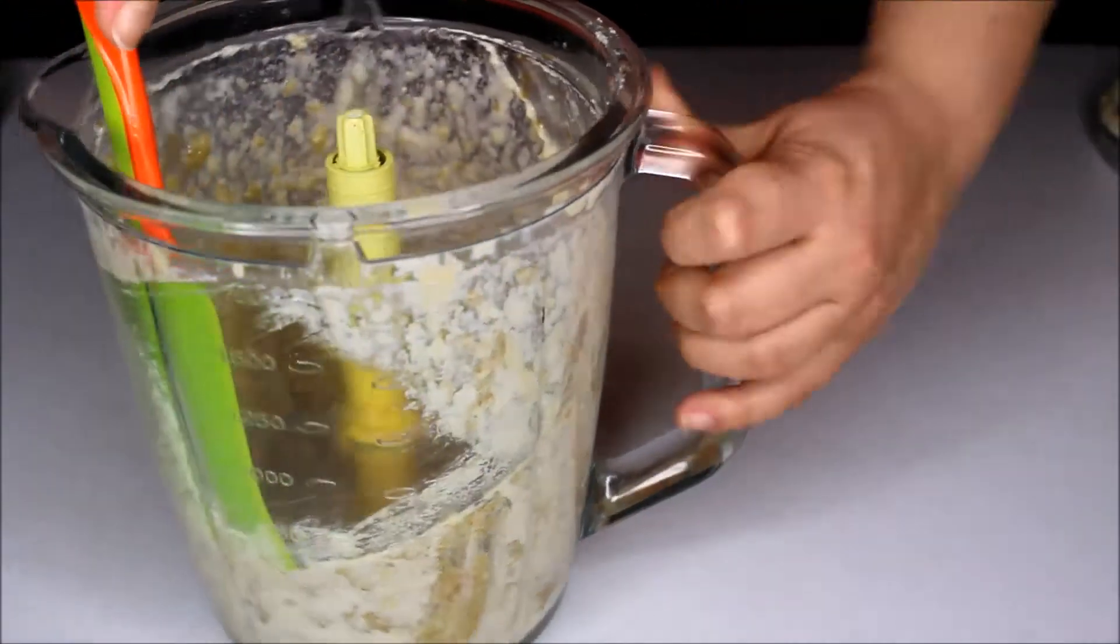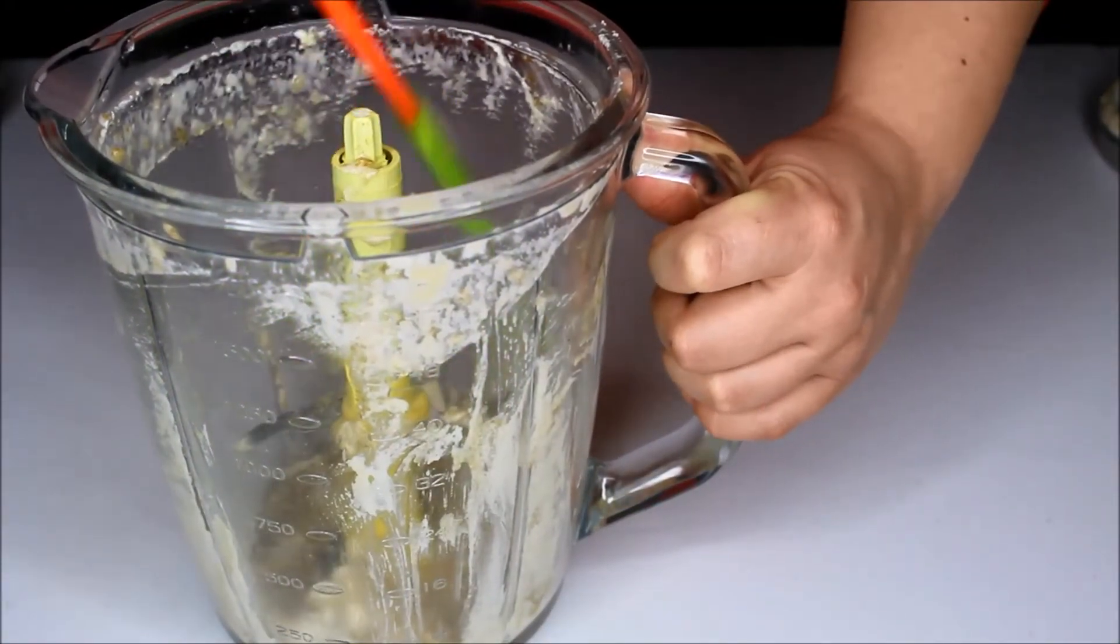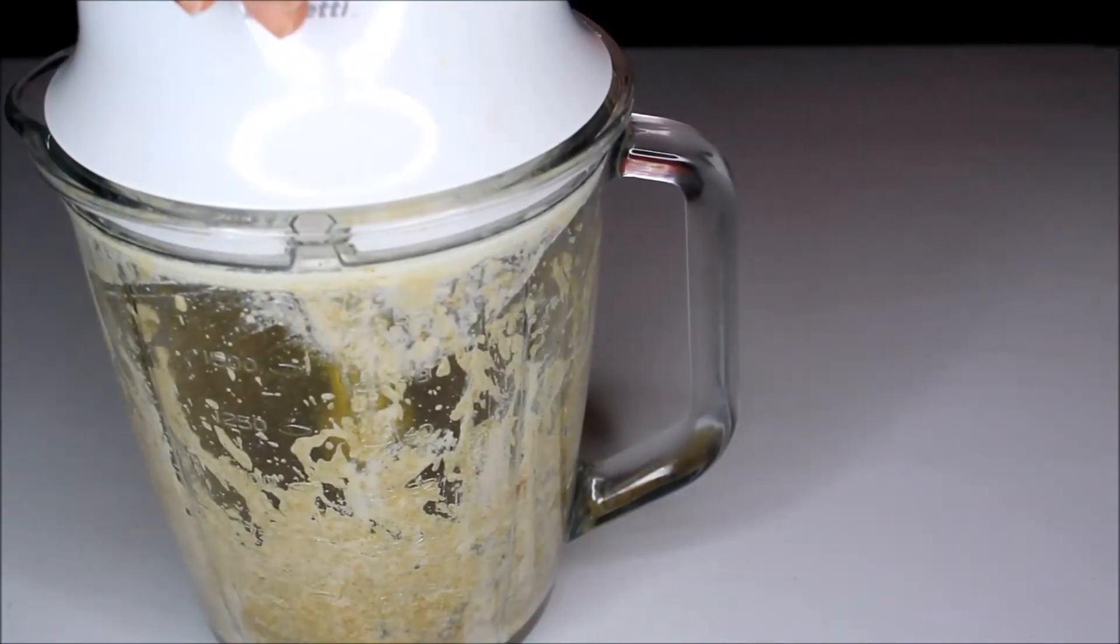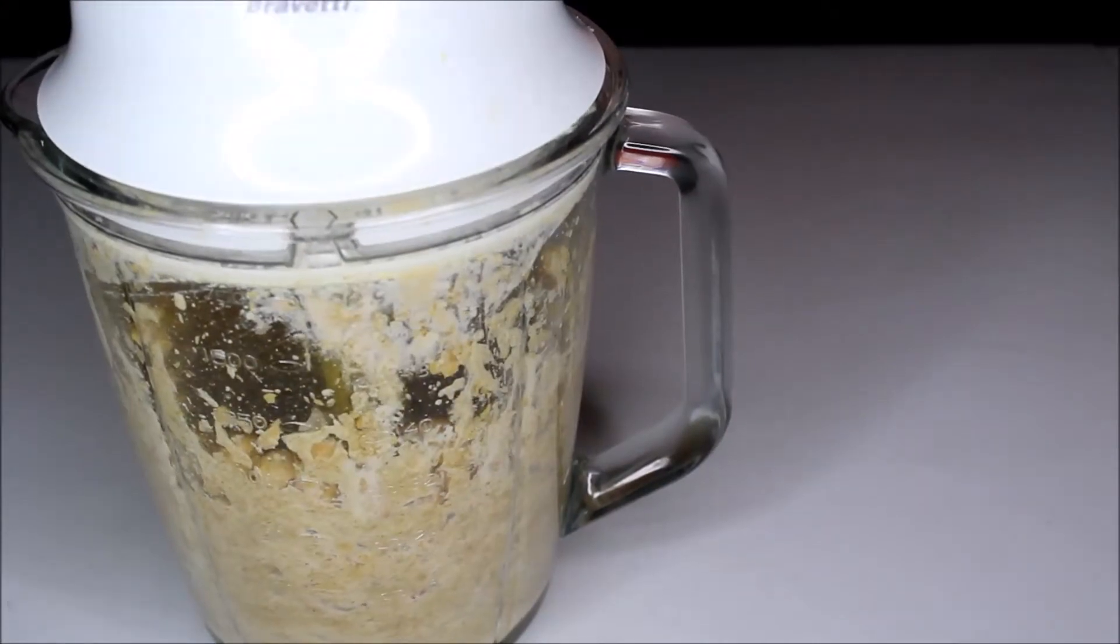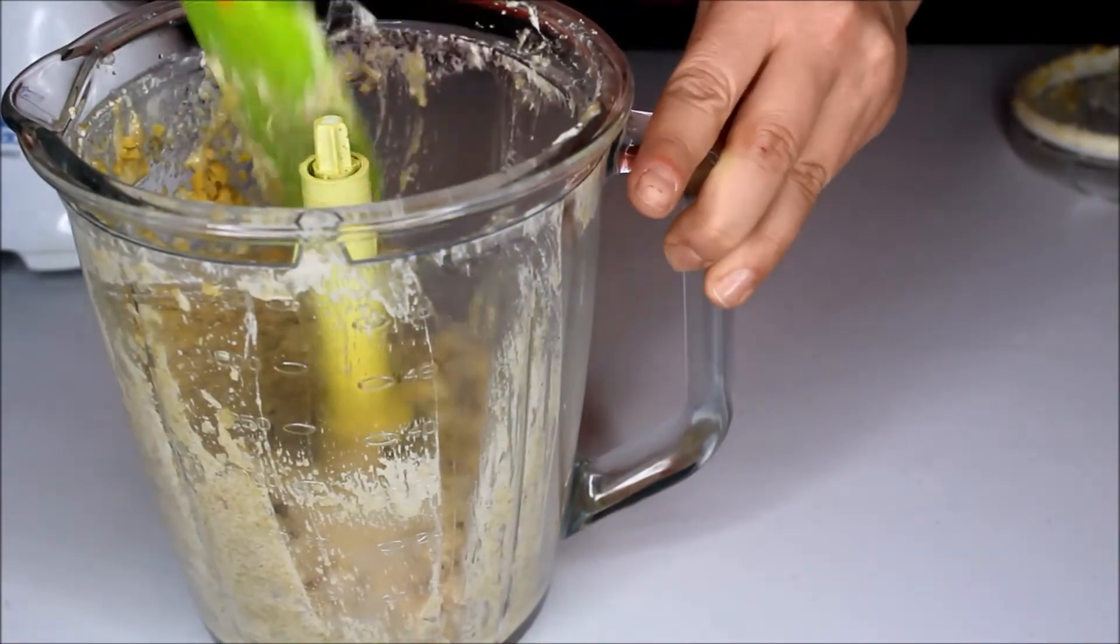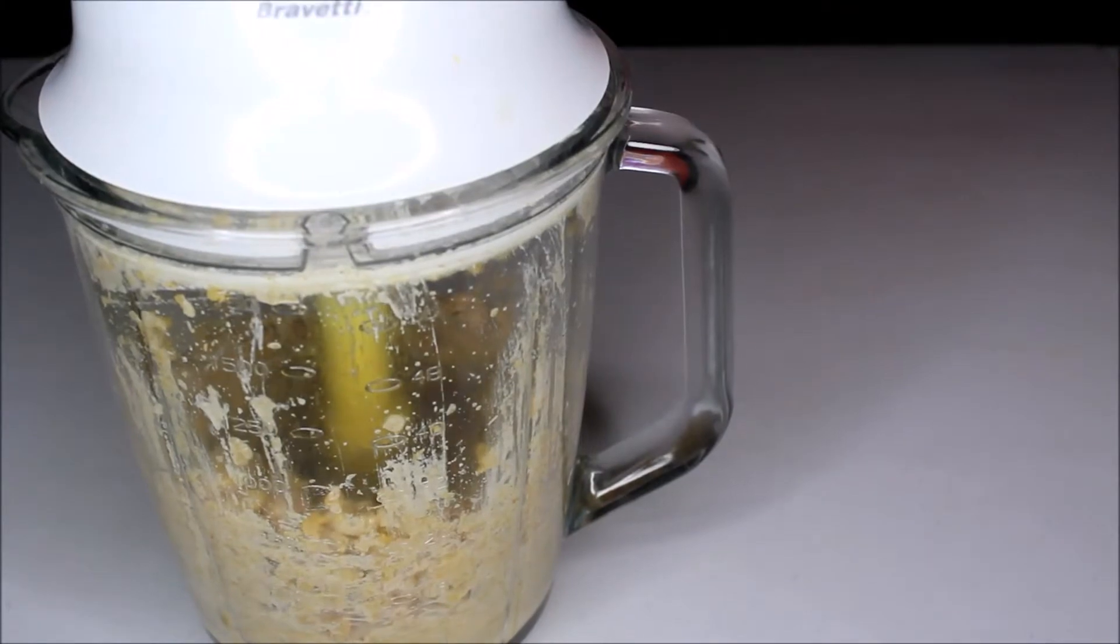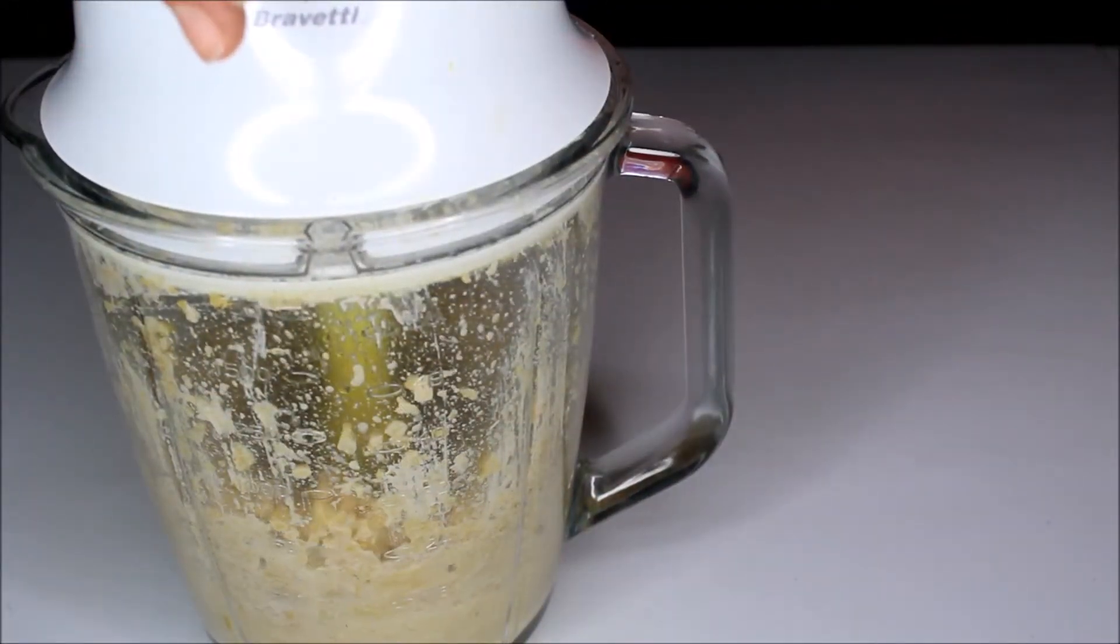And now I just wipe the sides of the blender and then I blend it a little bit again just so that it gets nice and smooth. And now I added one can of rinsed chickpeas. And the reason I'm doing this is so that I don't have big chunks in the hummus.